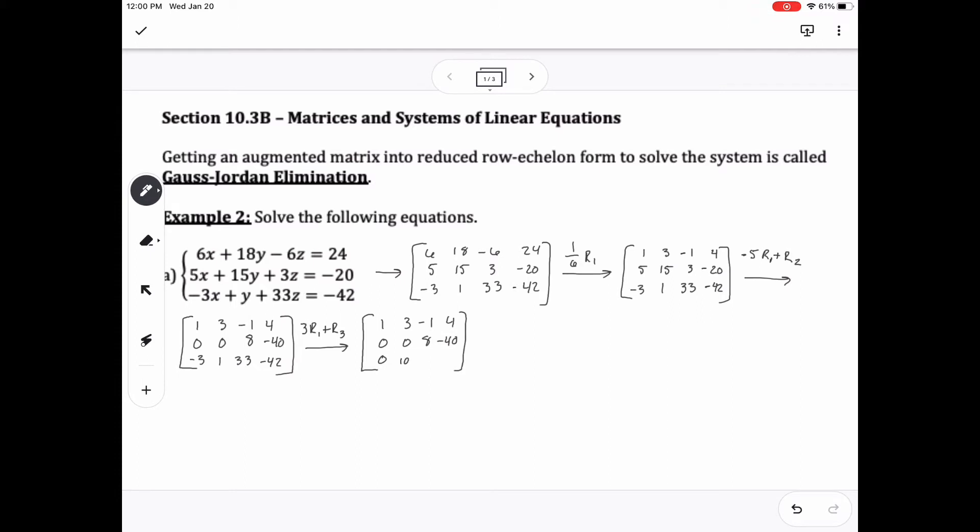Now, a unique thing happens here is that on the second row, the second entry has actually been changed to zero because of our addition, so then I can actually switch my two rows to fit my needs. I'm going to switch the second and the third row with one another, so now I can have a number in that second row, second position to make 1, so I'll multiply the second row by 1/10.